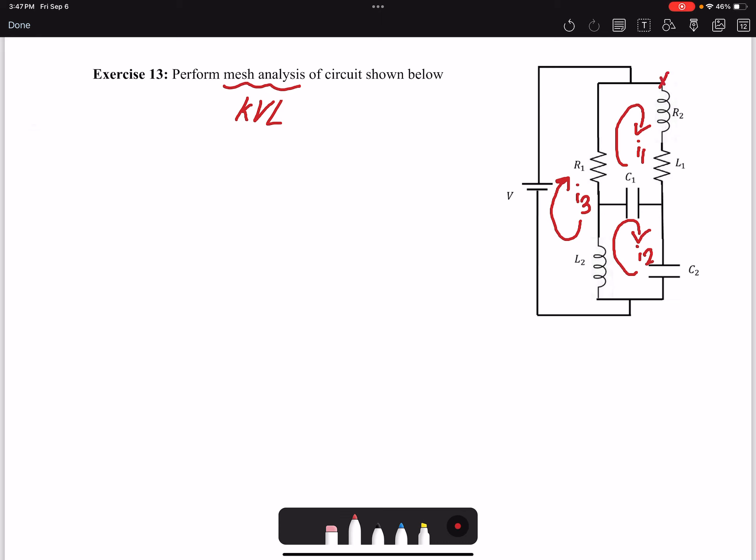So let's write Loop 1. If we go through the current, we're going to have negative, so I will have negative R2. I'll just write it in Laplace domain from the very beginning. Then I go through L, minus L1*s*I1(s).